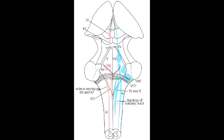What is the function of nucleus ambiguus? The function of nucleus ambiguus is to provide motor innervation of the pharynx, larynx, and the upper esophagus for swallowing and palate elevation.